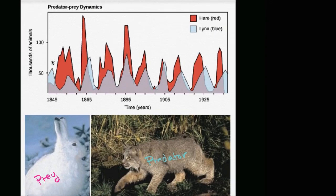And as you see, when the predator population is high, when we have a lot of the Canadian lynx around, we see a lower population of the prey, of the hare.